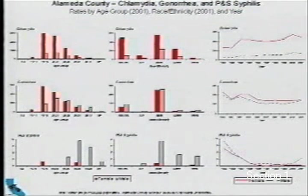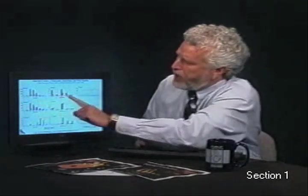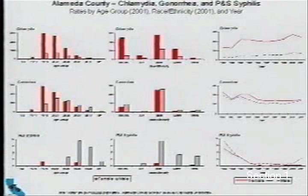This figure here is from the STD Control Branch's website. We had the same type of figure in a data table for every single health jurisdiction in California, but we're using the concepts of small multiples and parallelism to show the differences in the three main reportable STDs in California: chlamydia, gonorrhea, and syphilis. For chlamydia, we have age group, race and ethnicity, and a time trend going across the top. Going down, we have the different diseases, allowing comparisons by age group across diseases or for different factors of the disease going across. We believe it's a very dense, rich presentation of a lot of important information for our partners in the local health jurisdictions.